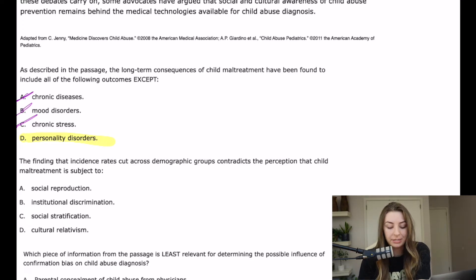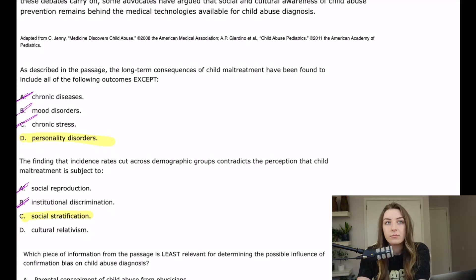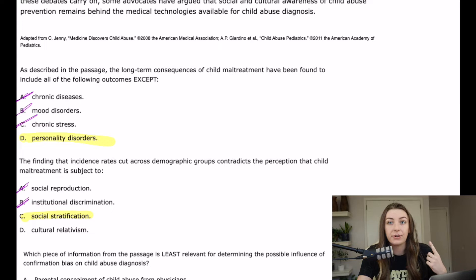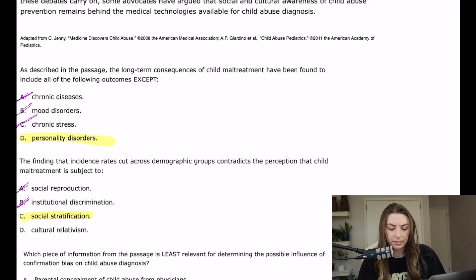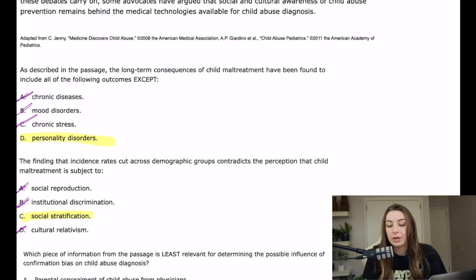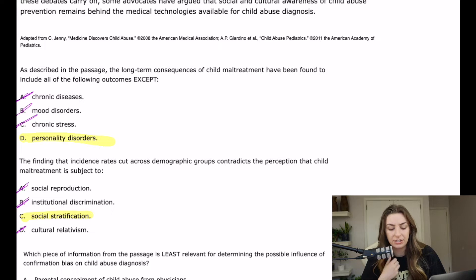The answer choices are: social reproduction — not really what I'm looking for. Institutional discrimination — no. Social stratification — yes. Social stratification is the way that society breaks up its citizens into groups based on demographics, class, and other factors. This would be considering demographic stratification, so the data would contradict the perception that child maltreatment is subject to social stratification. Cultural relativism — no. If you don't know the definitions for the other three answer choices, highly recommend you look them up, because those are all definitions you'll want to know for the MCAT.